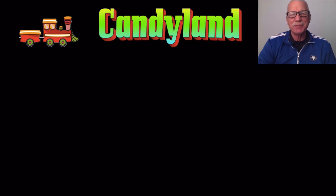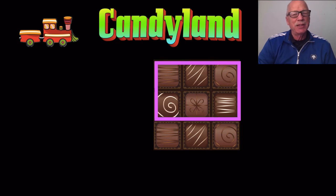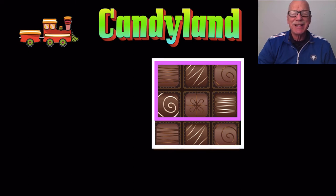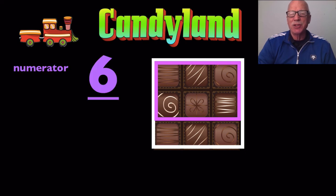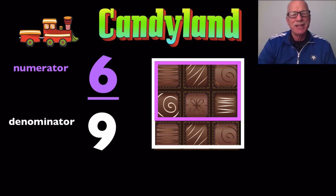One more time — this is fun! There are six; that's some of the whole bunch of chocolate. Six of nine pieces of chocolate. Numerator six, denominator — the whole group — is nine. Six of nine.